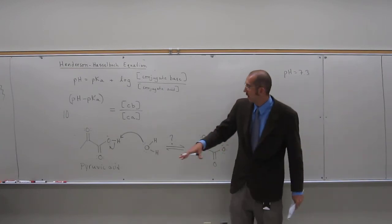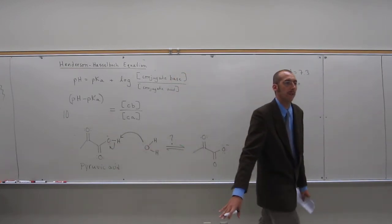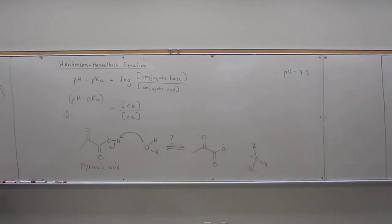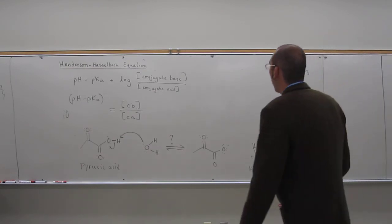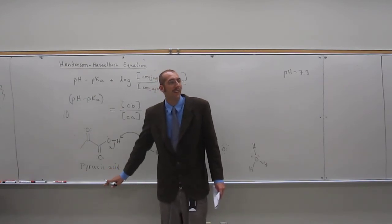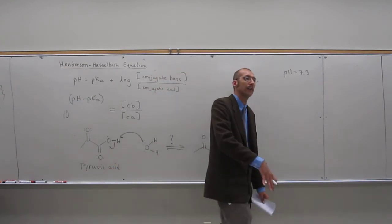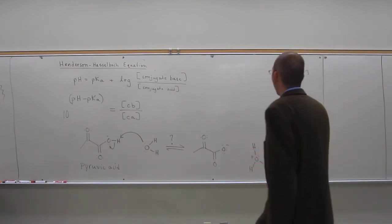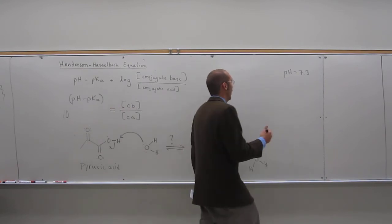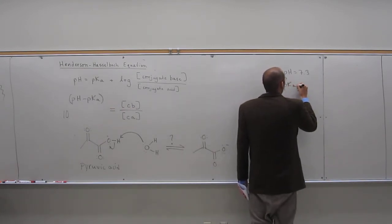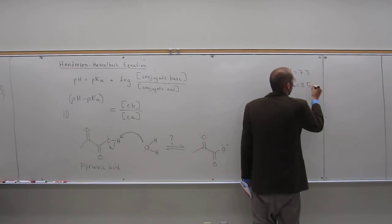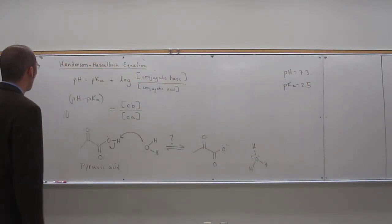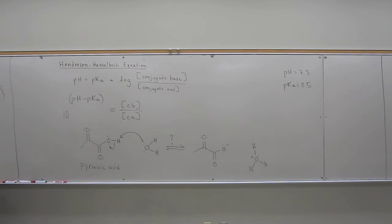pKa for a particular thing has to be given to you, okay? So you can look in the pKa table and get kind of a range of what it would be if it's like a carboxylic acid or something like that. But if I say pyruvic acid, I would probably give you the pKa of pyruvic acid, okay? So the pKa of pyruvic acid is 2.5. And from there, it's a pretty straightforward calculation.